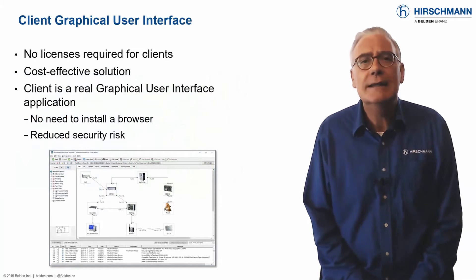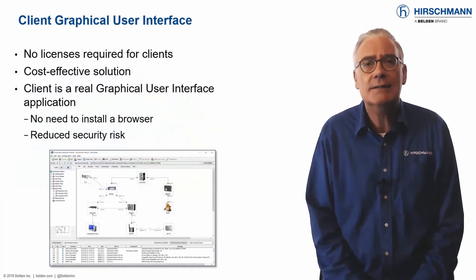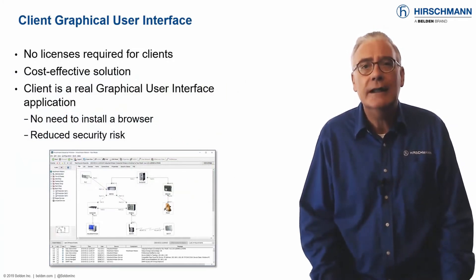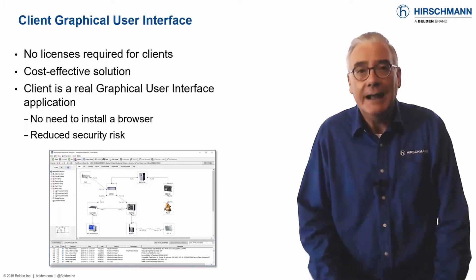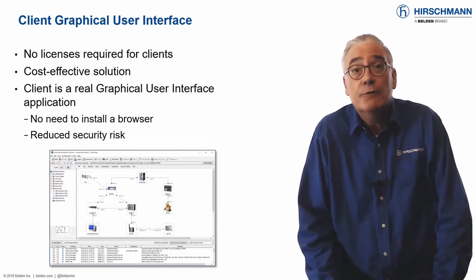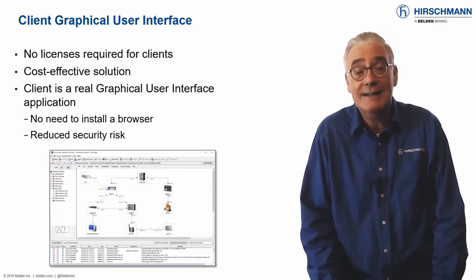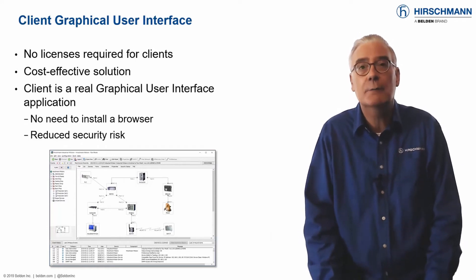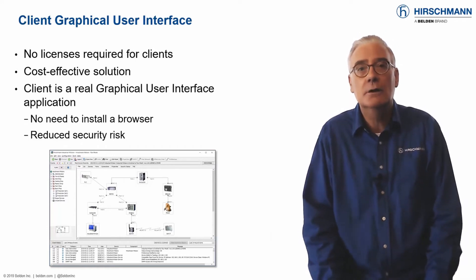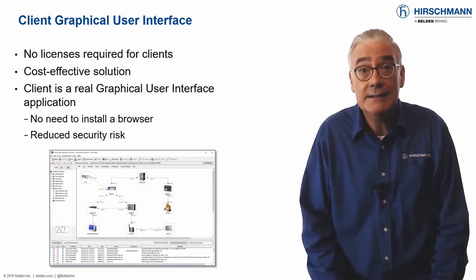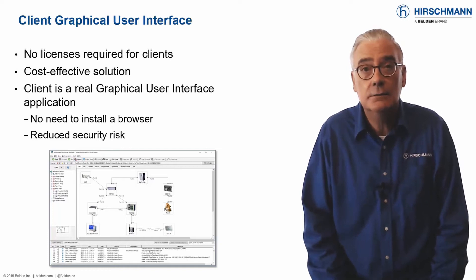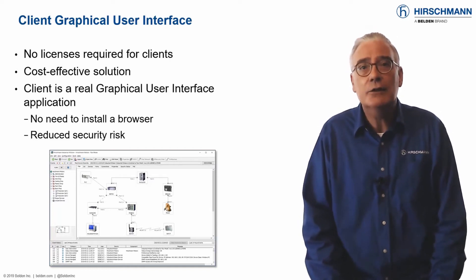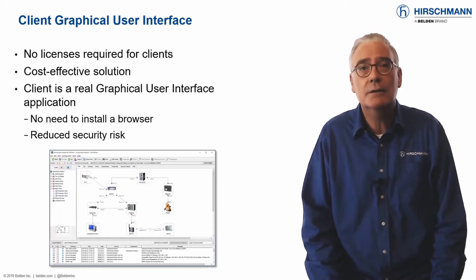Industrial HiVision is a client-server application. The server is the core of the system and is responsible for polling the network devices and correlating the received information. The server requires a license. The client provides the graphical user interface to the server.